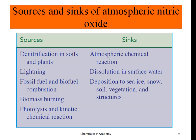The sources and sinks of atmospheric nitric oxide are as follows. Sources include denitrification in soils and plants, lightning, fossil fuel and biofuel combustion, biomass burning, photolysis, and kinetic chemical reactions. Sinks include atmospheric chemical reactions, dissolution in surface water, and deposition to sea ice, snow, soil, vegetation, and structures.